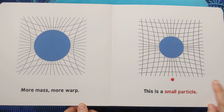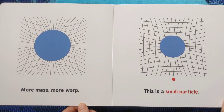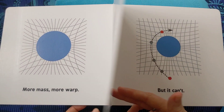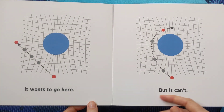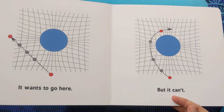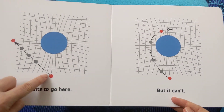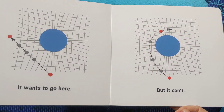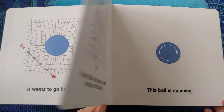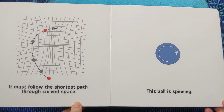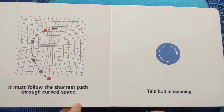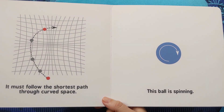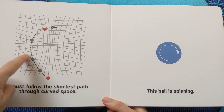This is a small particle. It wants to go here, but it can't. It must follow the shortest path through curved space.